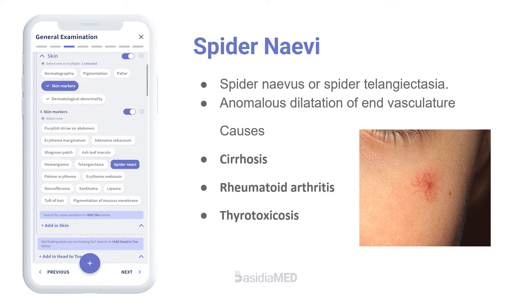Spider angioma, also known as spider nevus or spider telangiectasia, is a vascular lesion characterized by anomalous dilatation of end vasculature found just beneath the skin's surface. The lesion contains a central red spot and reddish extensions which radiate outward like a spider's web. Spider angiomas are usually benign, but often can be suggestive of an underlying systemic disease such as cirrhosis, rheumatoid arthritis, or thyrotoxicosis.